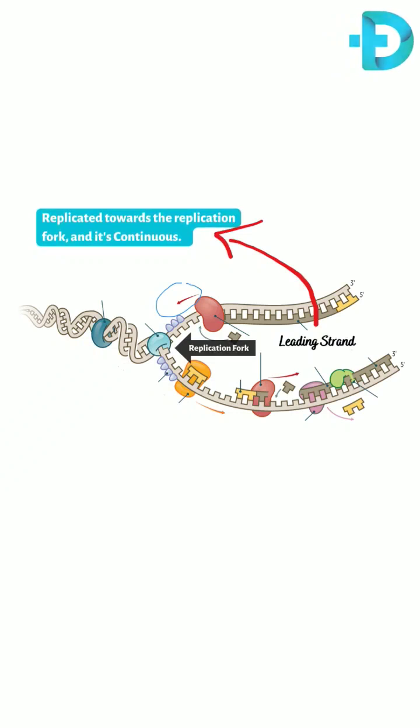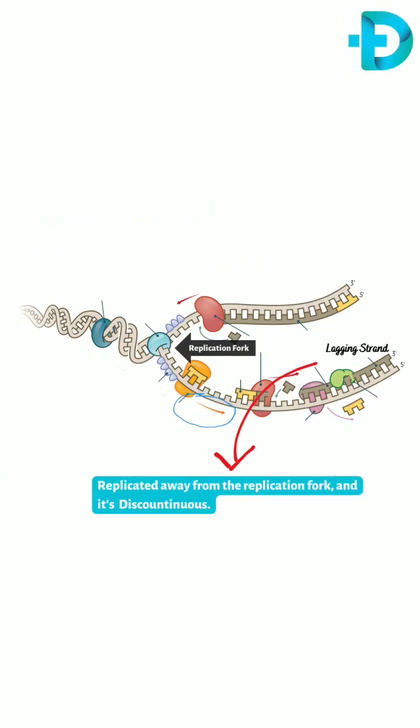The leading strand is replicated towards the replication fork. However, the lagging strand is replicated away from the replication fork.